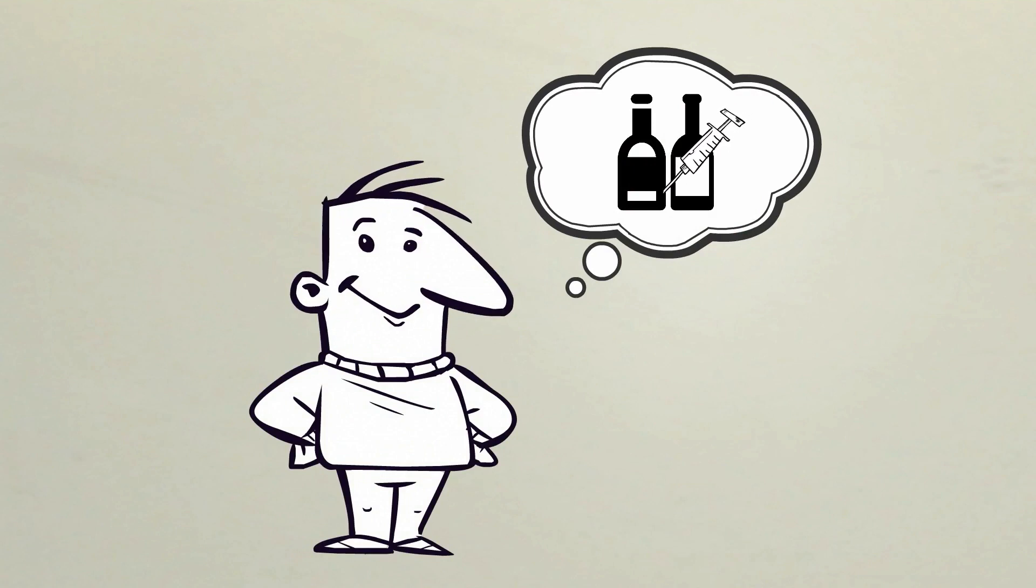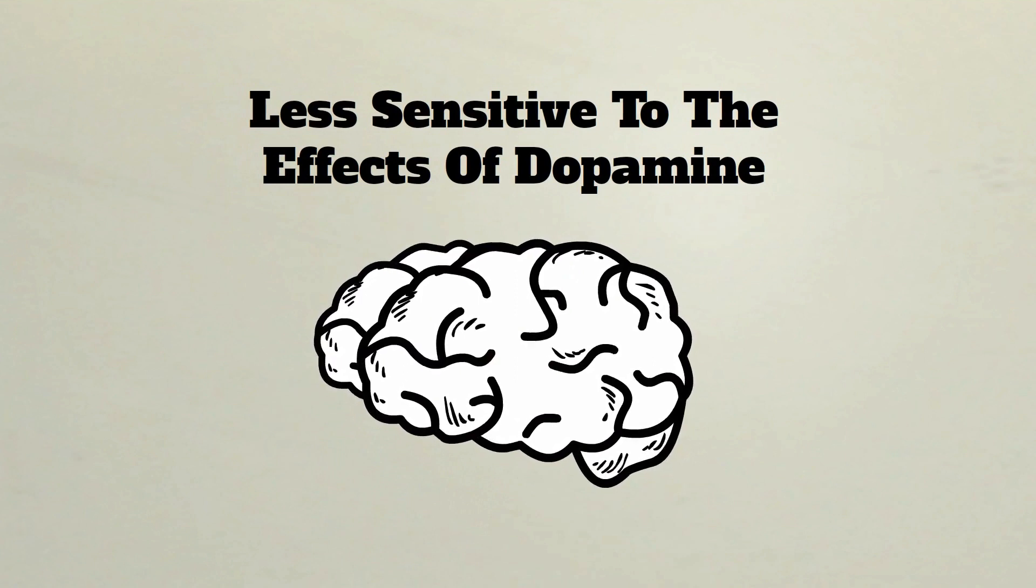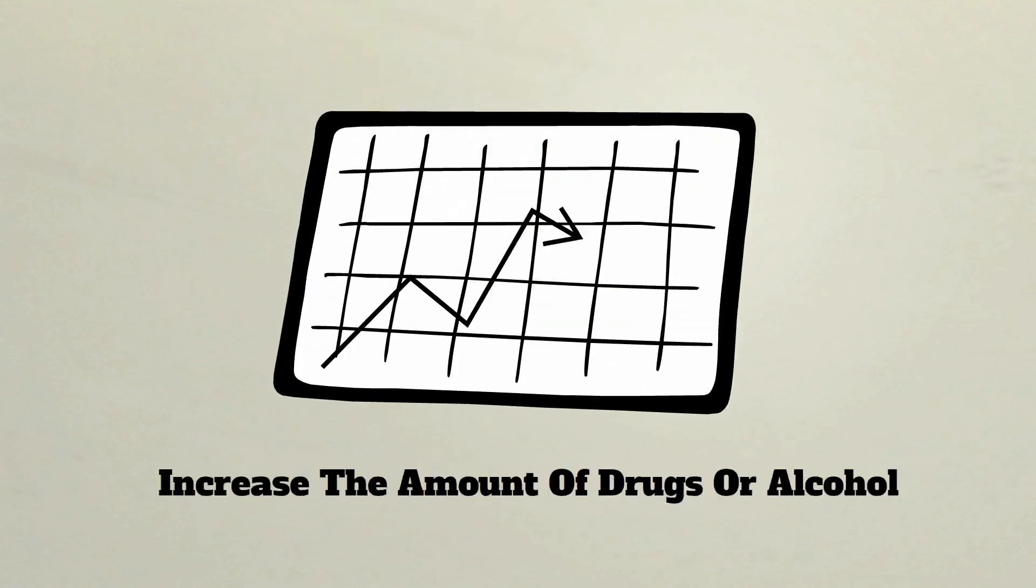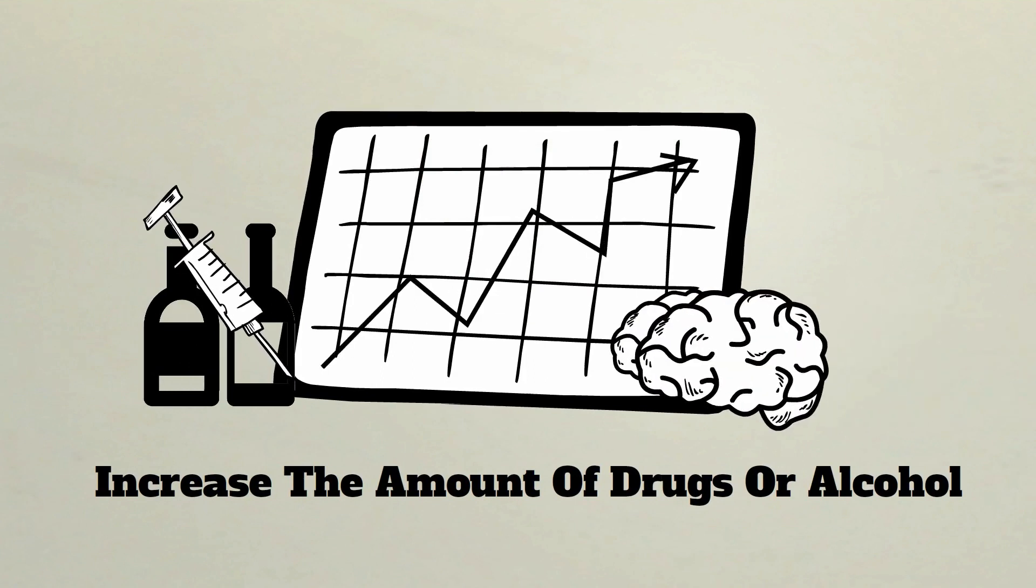When drugs or alcohol are used repeatedly over time, the brain adapts and becomes less sensitive to the effects of dopamine. We build up a tolerance and need to increase the amount of drugs or alcohol to feel the same amount of pleasure.